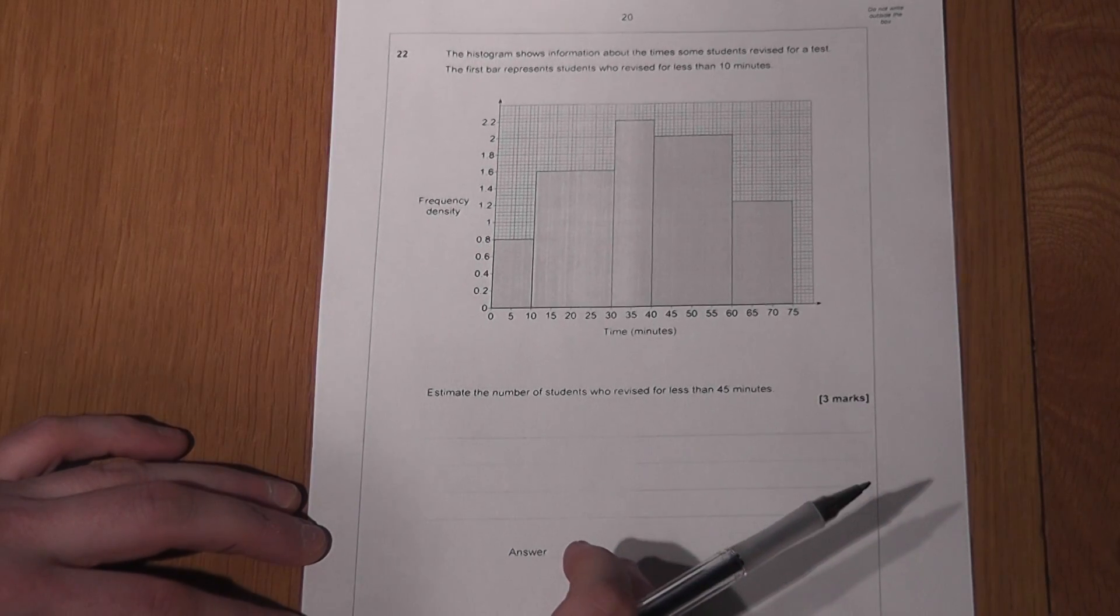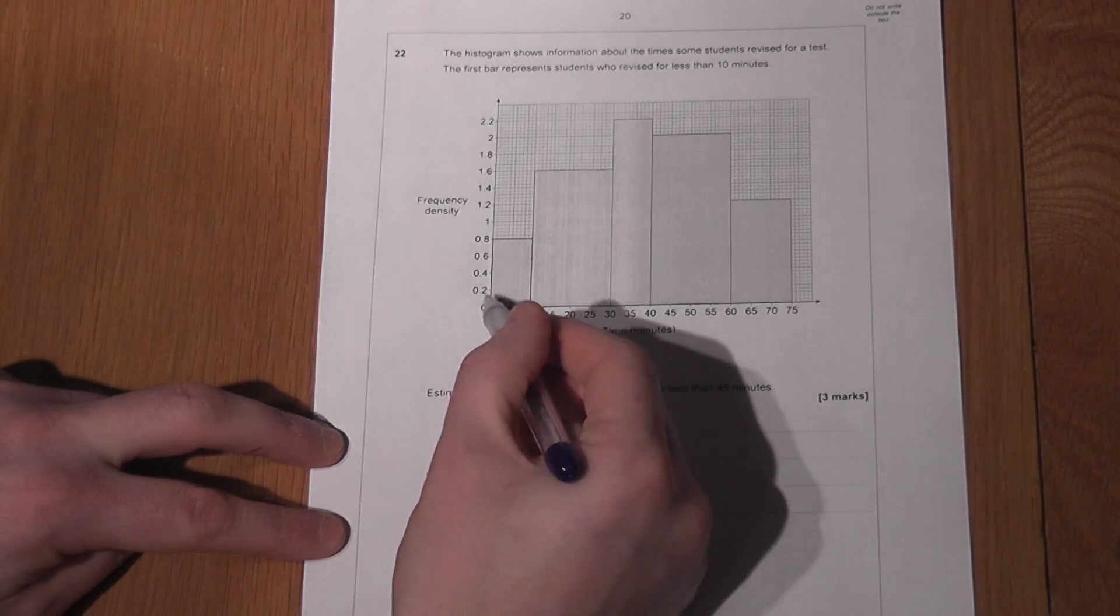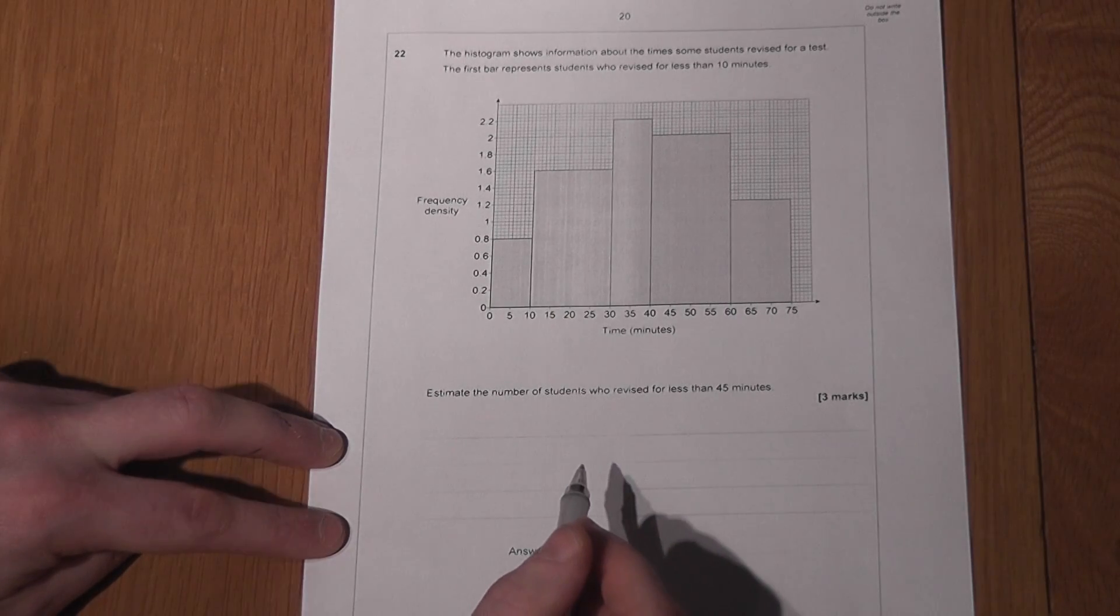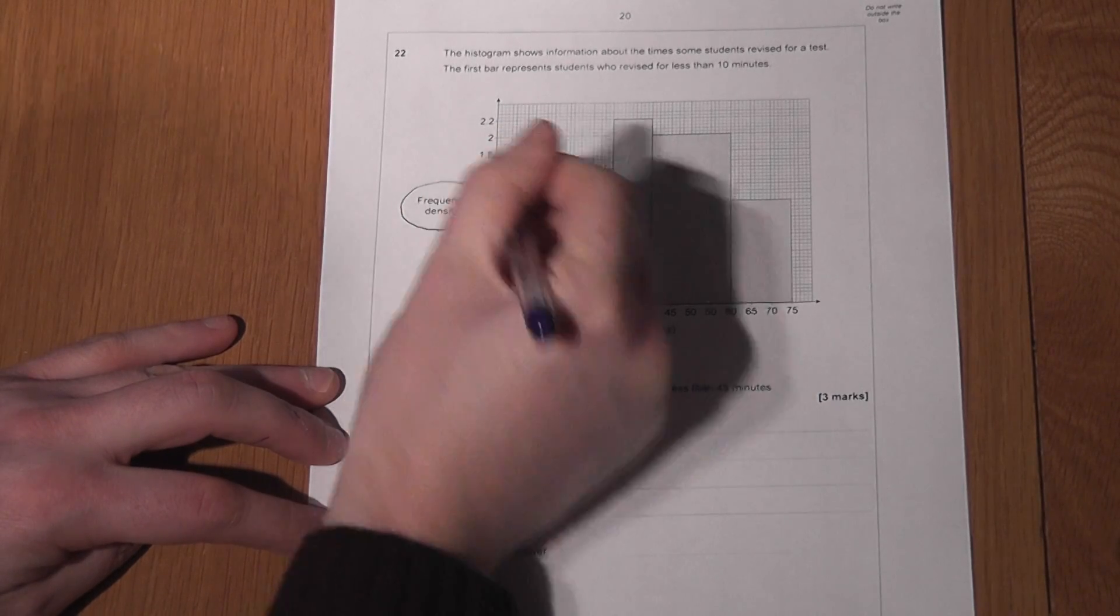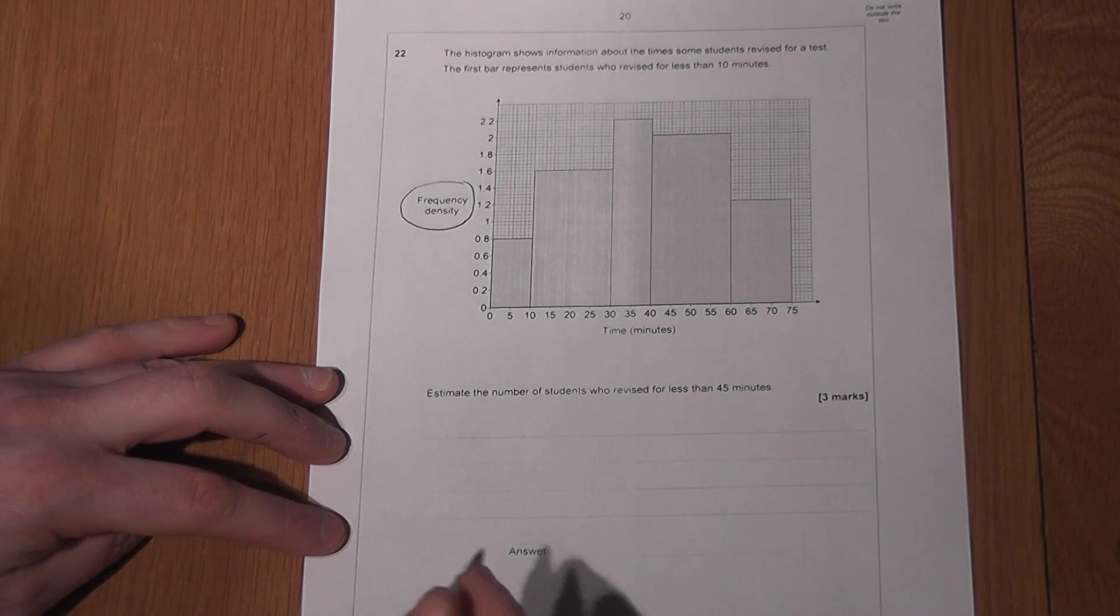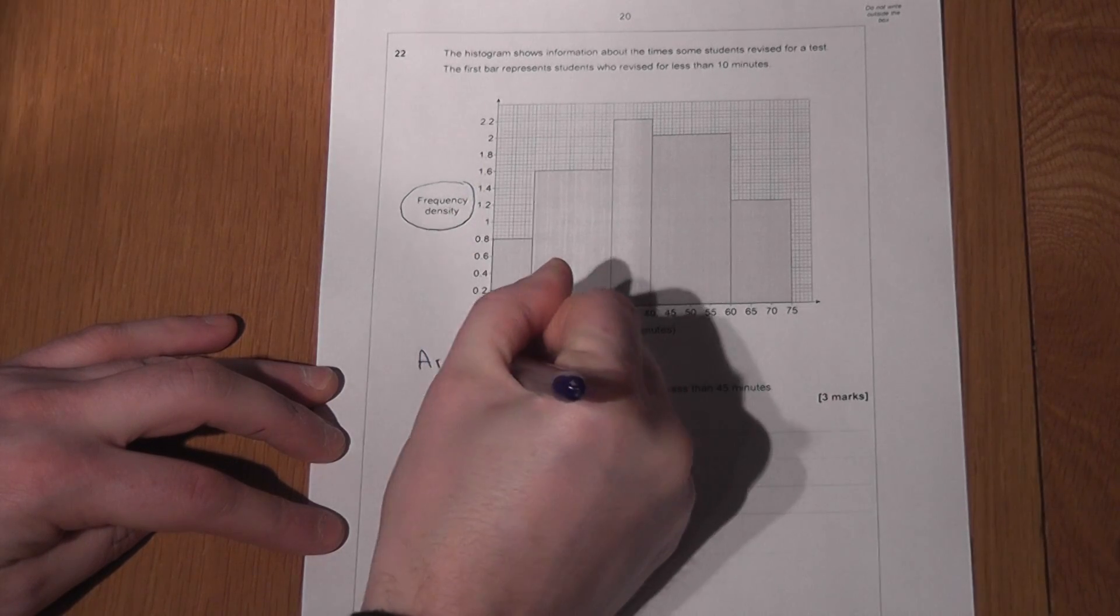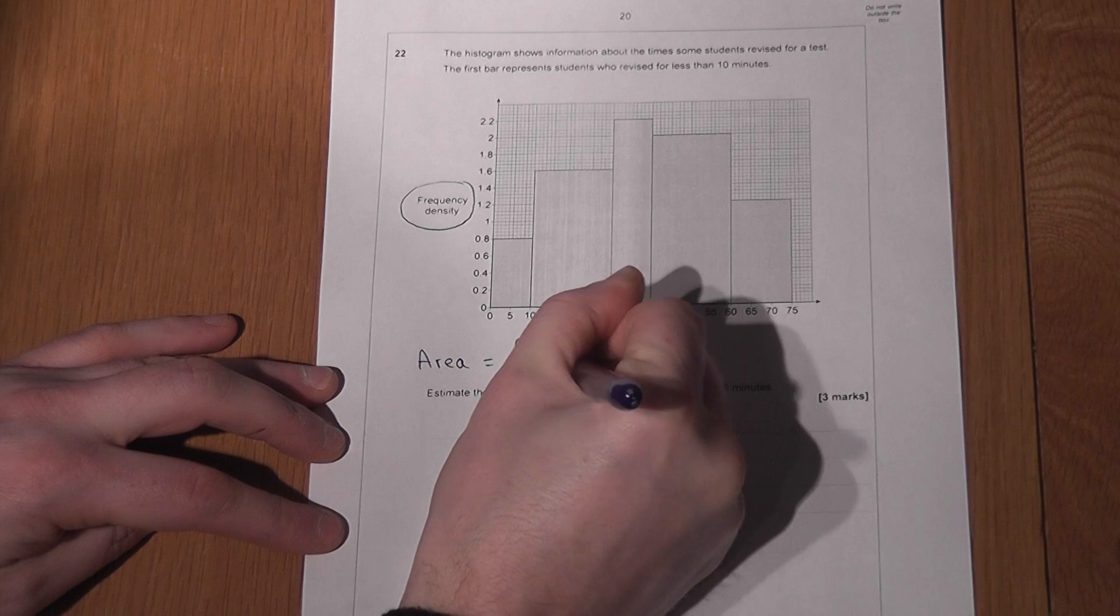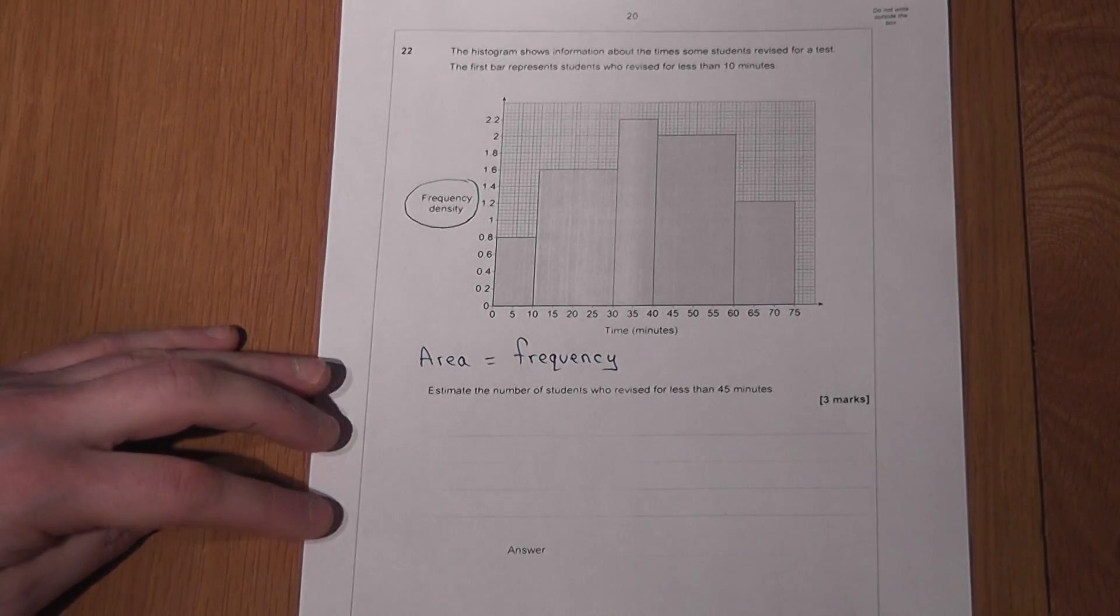However, here's the key information about a histogram: the height of the graph is not the frequency, it's called the frequency density. And in a histogram, the key fact is that the area of the bars equals the frequency.